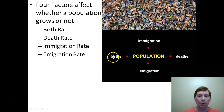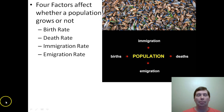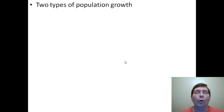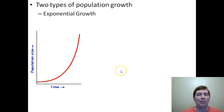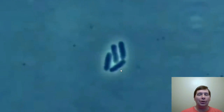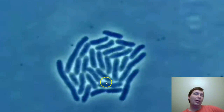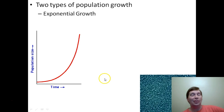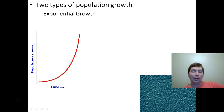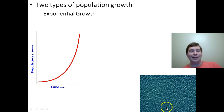A population can only grow if its birth rate and immigration rate combined are larger than its death rate and emigration rate combined. When we talk about population growth, there are two patterns a population will follow. The first is exponential growth — when a population starts out small and then just takes off and grows really quickly, producing lots of individuals in a short amount of time. Bacteria are an example: one cell divides into two, two into four, four into eight, and they grow really rapidly. That's exponential growth.